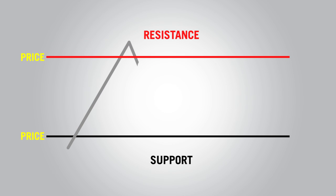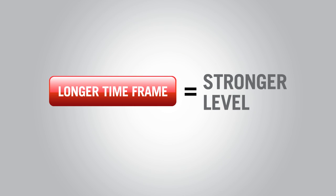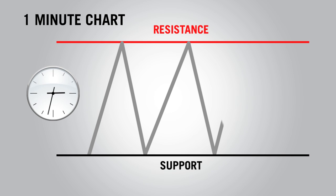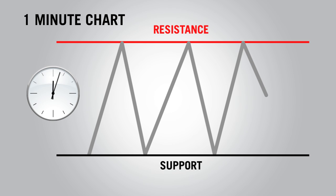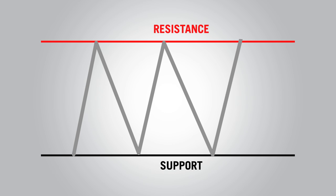Support and resistance levels don't have to be to the exact pip — usually it will be within 5 to 10 pips. There are occasional fascinating instances when a level will hold to the exact pip over long periods of time. With both support and resistance, the longer the time frame on the chart, the stronger the level is. For example, support or resistance on a one-minute chart over a few hours is not as significant as levels formed on a four-hour chart over a few months. Traders will either trade a bounce off support, trade when support or resistance is broken, or use them to confirm another trading strategy.